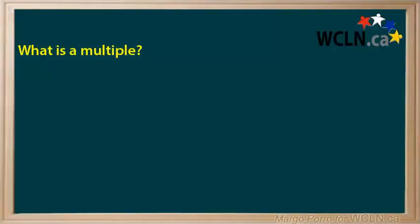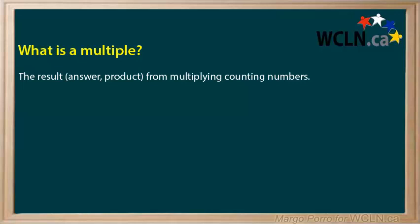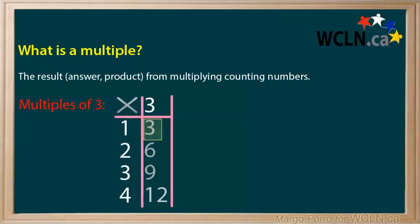What is a multiple? The result, answer, or product from multiplying counting numbers. For example, the first four multiples of 3 are 3, the product of 1 times 3, 6, the product of 2 times 3, 9, the product of 3 times 3, and 12, the product of 3 times 4.